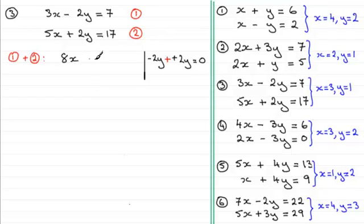And then we've got equals and then we've got 7 plus 17 which is going to be 24. So it's just a case now of solving this by dividing both sides by 8 and that leaves us with x equals 24 divided by 8 which is 3.